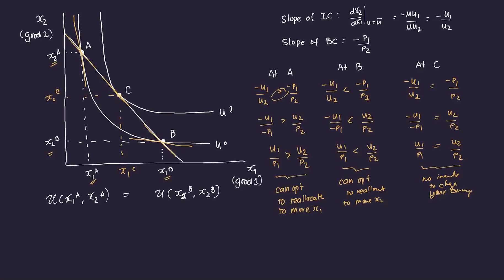But at point C, they're already equal. The consumer gets X1C and X2C, where the marginal utility per unit of currency spent on good one equals the marginal utility per unit of currency spent on good two. There's no incentive to change the consumption pattern. This leads to our first first-order condition: U1 over U2 — the marginal rate of substitution of good one for good two — must equal the price ratio P1 over P2. That condition occurs when the indifference curve is tangent to the budget line at point C.